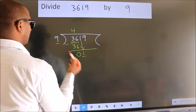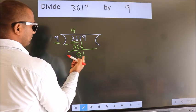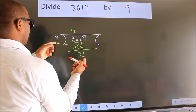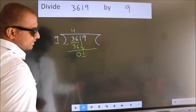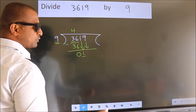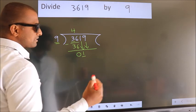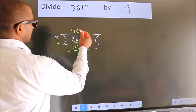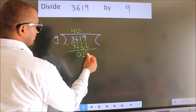Here we have 1. Here 9. 1 smaller than 9. So, we should bring down the second number. And the rule to bring down second number is put 0 here. Then only we can bring down this number.